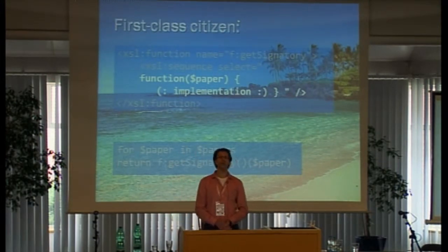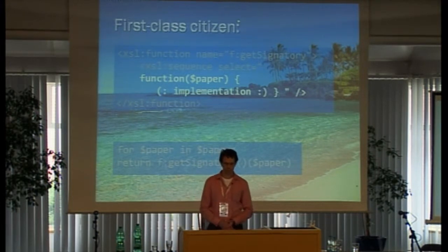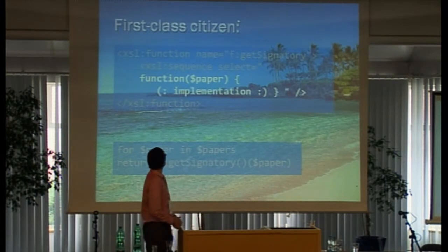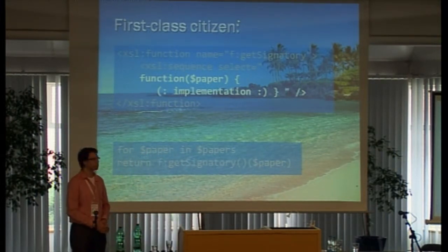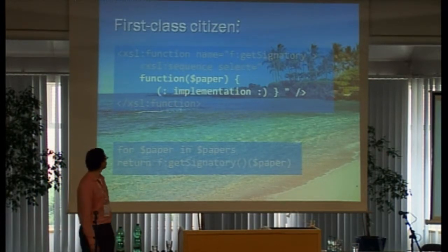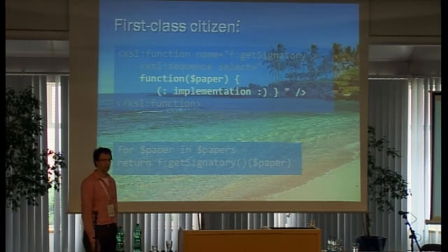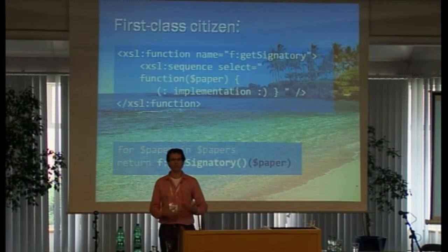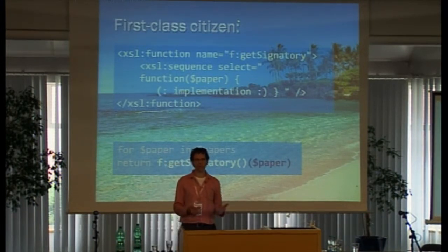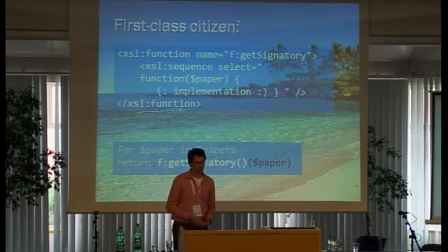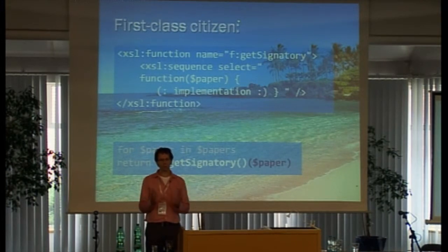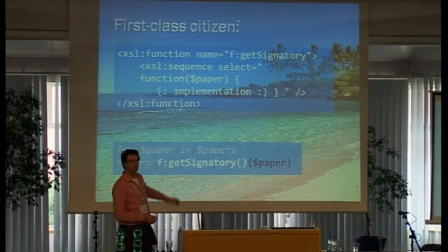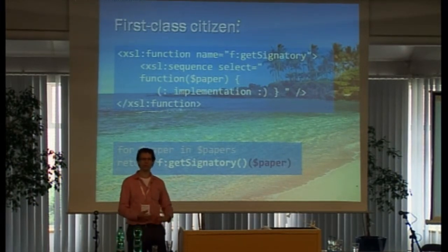Let's look at the code, how that would actually work in XSLT 3. Here you see a function defined, called get_signatory, and this function defines a new inline function inside it with an implementation, and returns that function as a whole. Now when I have a bunch of papers I want signed, I get the function I want to use for signing. When getting this function, I use the normal bracket syntax — the get_signatory function call with brackets, and then again new brackets to call the function that's actually returned.